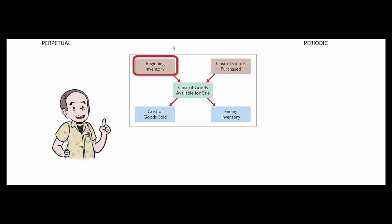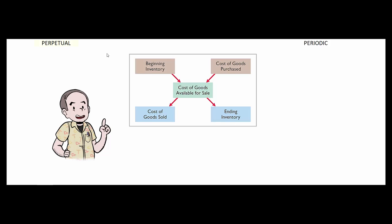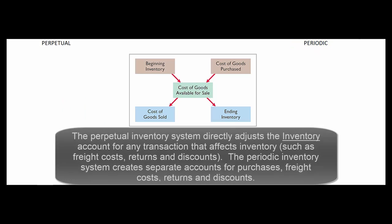So big picture, the concept is beginning inventory plus what we bought gives us our goods available for sale. And then at the end of the year, either we sold them or they're left in inventory. It's just a different mechanical approach whether we perpetually update our inventory or whether we wait to the end of the period. So let's look at some sample journal entries about how we track the actual cost of our inventory.